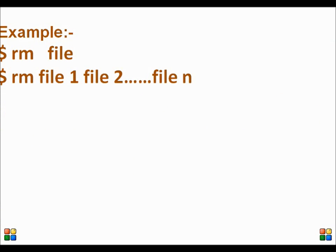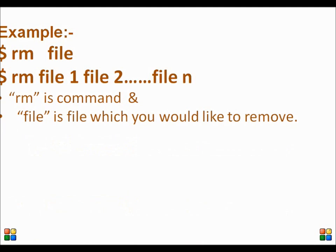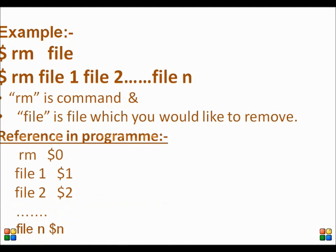Let us understand this with an example. In the first example, one argument is passed to the program. In the second example, n number of arguments is passed to the program. This command rm deletes the file. $0 is used to refer to the command. $1, $2, and so on to $n are used to refer to the positions of the parameters.